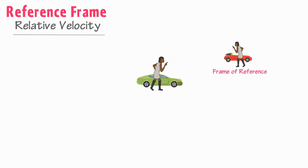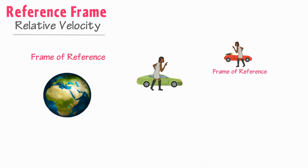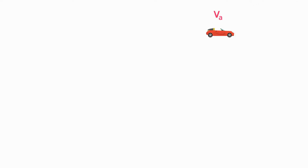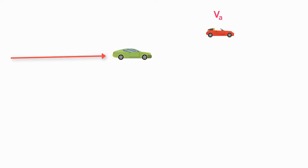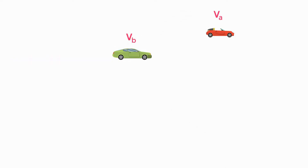Frame of reference depends on you and the place from where you observe the moving body. In this lecture, I will take the earth as a frame of reference. Now let me give you an example. If a car is moving in this direction, let the velocity of this car be VA. Let another car also be moving in this direction, and let the velocity of that car be VB.